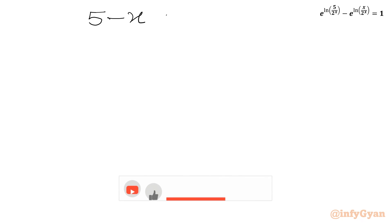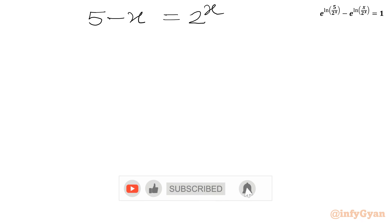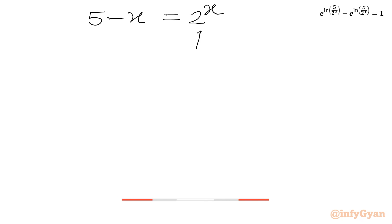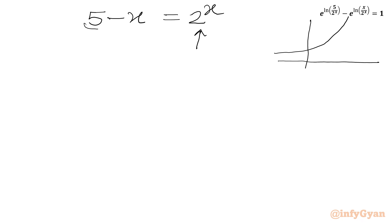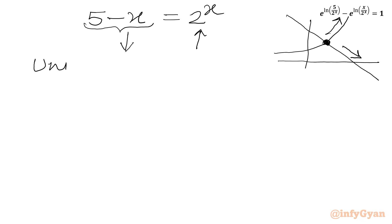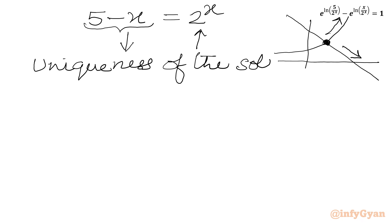Now, in the RHS we have one exponential function which is a monotonically increasing function, and in the LHS we have a straight line which is a decreasing function. One function is decreasing, another is increasing, so we will get at most one intersection point — a unique solution.